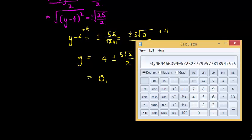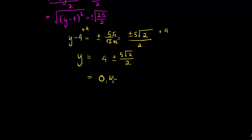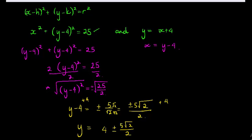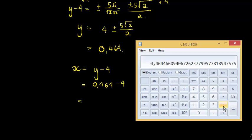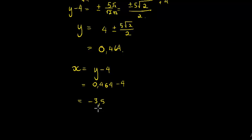Now for my x value, remember x was y - 4. In other words, it's 0.464 minus 4, so minus 4 from here is -3.536.